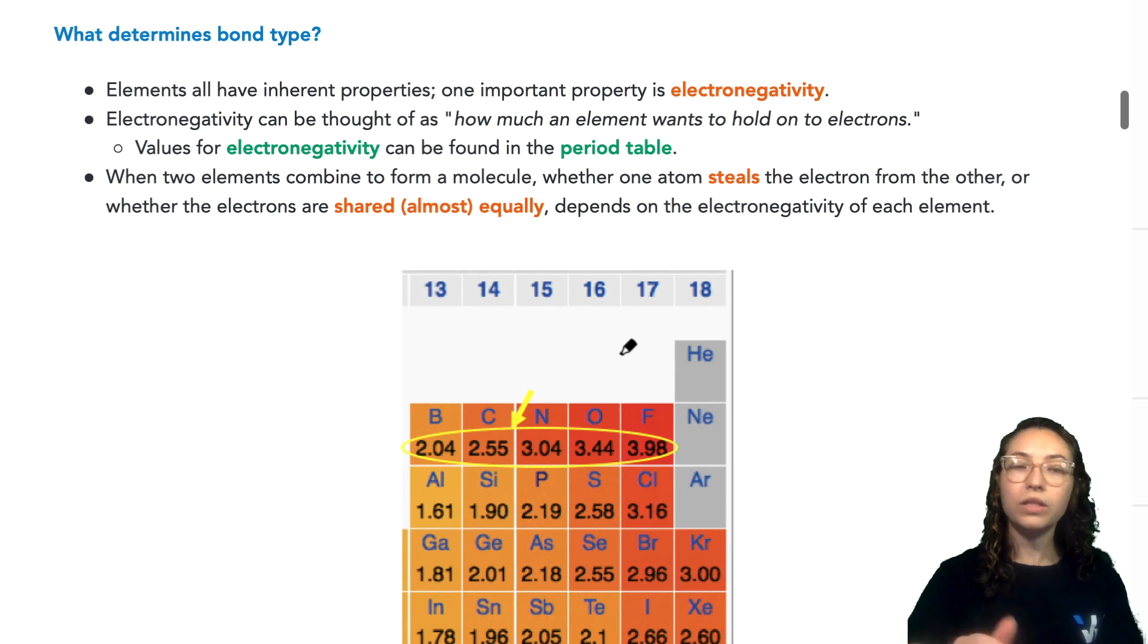First let's talk about what determines the type of bond that occurs between two elements. All elements have inherent properties, but one important one that you should keep in mind is electronegativity.